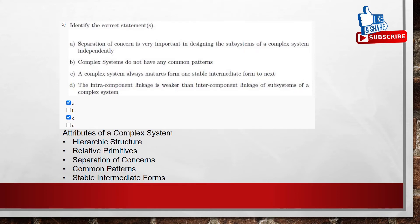Coming to the attributes, we know that hierarchical structure, relative primitive, separation of concerns, common patterns, stable intermediate forms. So separation of concerns is one of the important attributes for the complexity designing. So option A is the correct answer. Complex systems do not have common patterns. But every complex system will have some common patterns because then only we can reuse the system. So B can't be the correct answer.